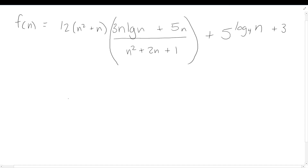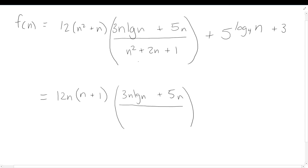To simplify the messiness, I'll factor out 12n from the numerator, which leaves us with (n+1). Then on the denominator, I'll notice that the quadratic expression written there is actually (n+1)², or (n+1) times (n+1). So some cancelling happens — but I still have an n up here and an n+1 down there that we'll need to deal with.